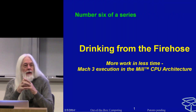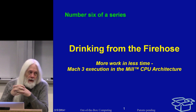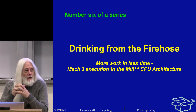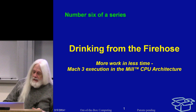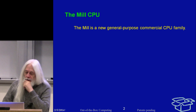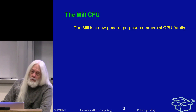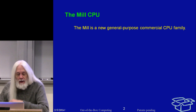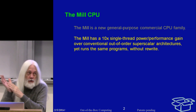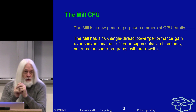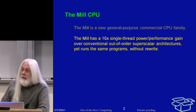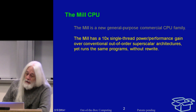Today's talk is about certain aspects of the execution model used by the Mill architecture. The Mill is a family of CPU designs — a family in the sense of the IBM 360. It's a commercial product, still in development, and it offers a 10x power-performance advantage over existing architectures. This is an architectural advance — not a circuit advance, not a fab advance. We use exactly the same run-of-the-fab circuits and standard rules as anybody else.